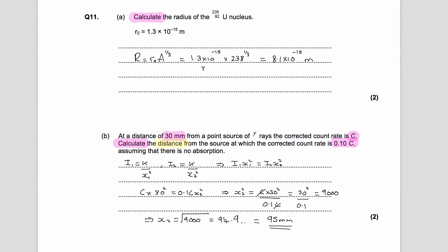So we put this into our equation, so that's the R₀ from up here. This is 238 to the power of a third, and simply putting that on your calculator gives you 8.1 times 10 to the minus 15 meters. You get one mark for putting the right numbers in, one mark for the right answer.